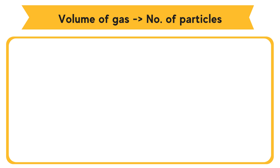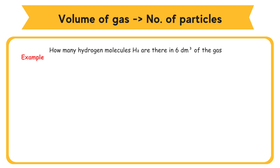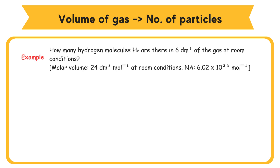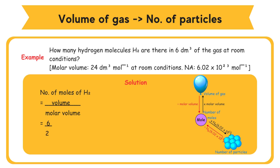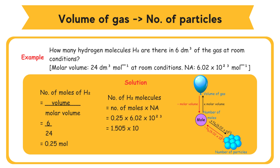Convert from volume of gas to number of particles. Example: How many hydrogen molecules, H₂, are there in 6 dm³ of the gas at room conditions? Molar volume = 24 dm³/mol at room conditions; N_A = 6.02 × 10²³ per mole. Solution: Number of moles of H₂ = volume ÷ molar volume = 6 ÷ 24 = 0.25 moles. Number of H₂ molecules = number of moles × N_A = 0.25 × 6.02 × 10²³ = 1.505 × 10²³ molecules.